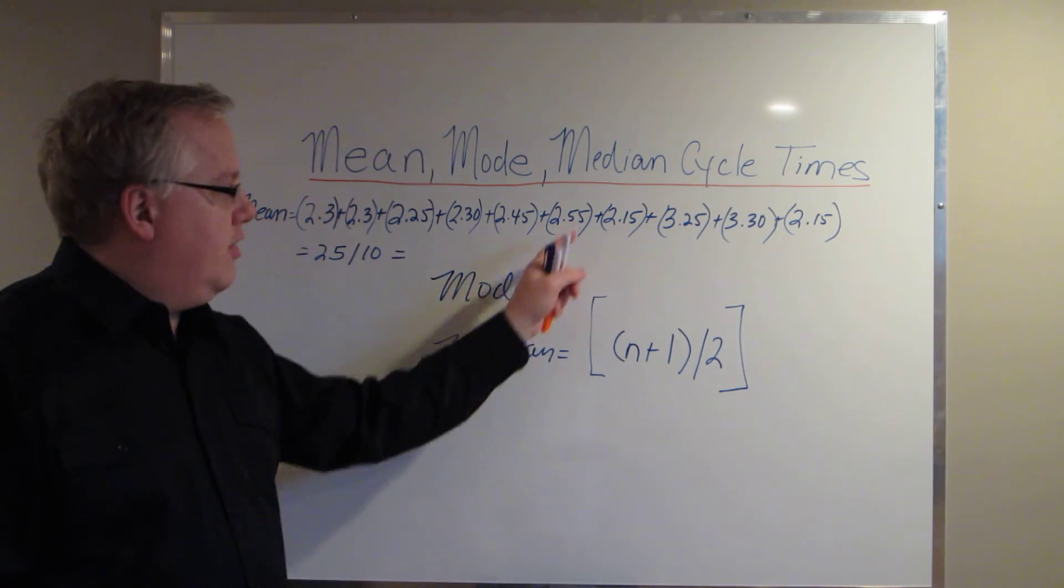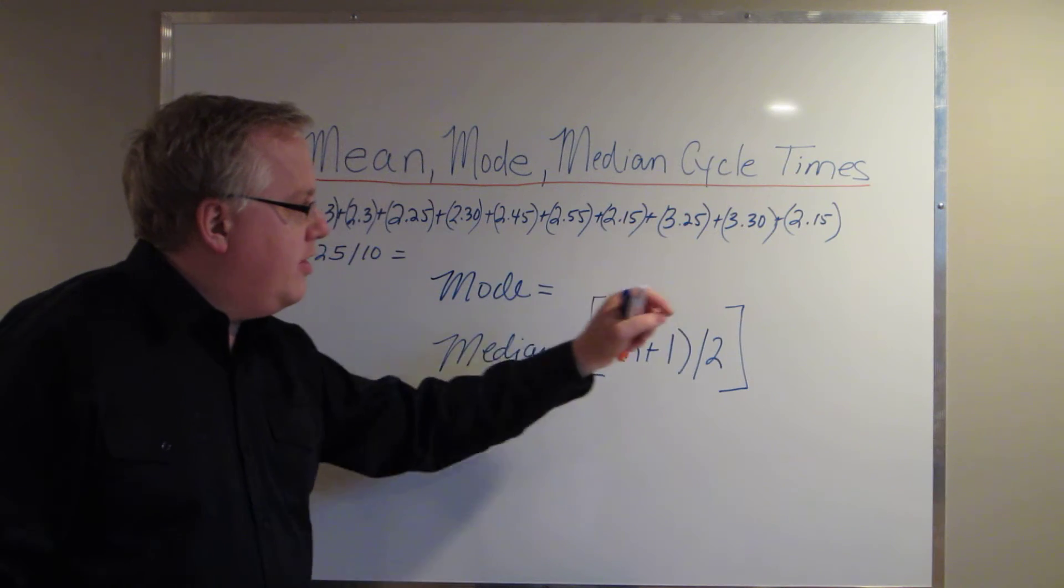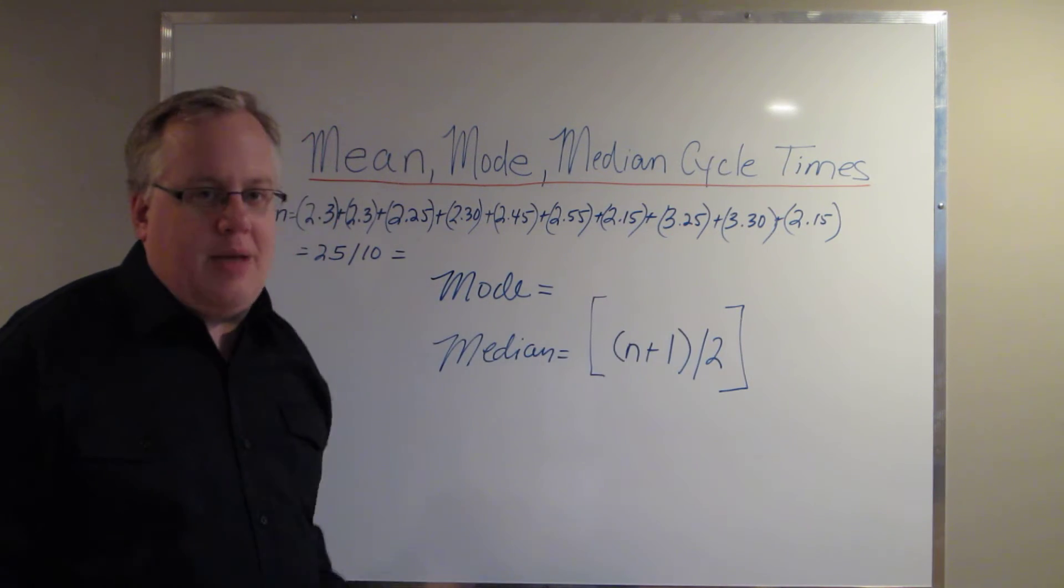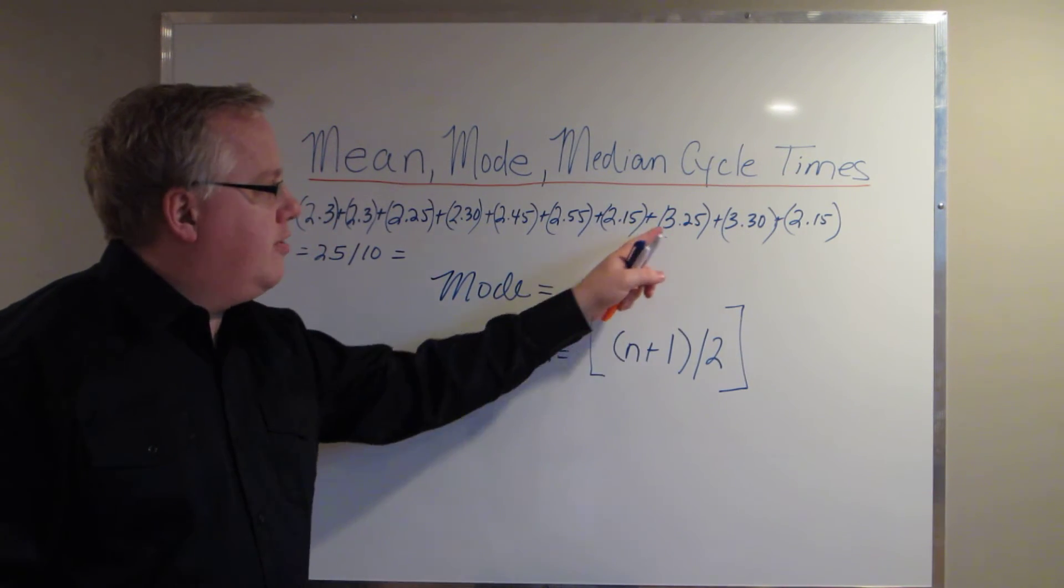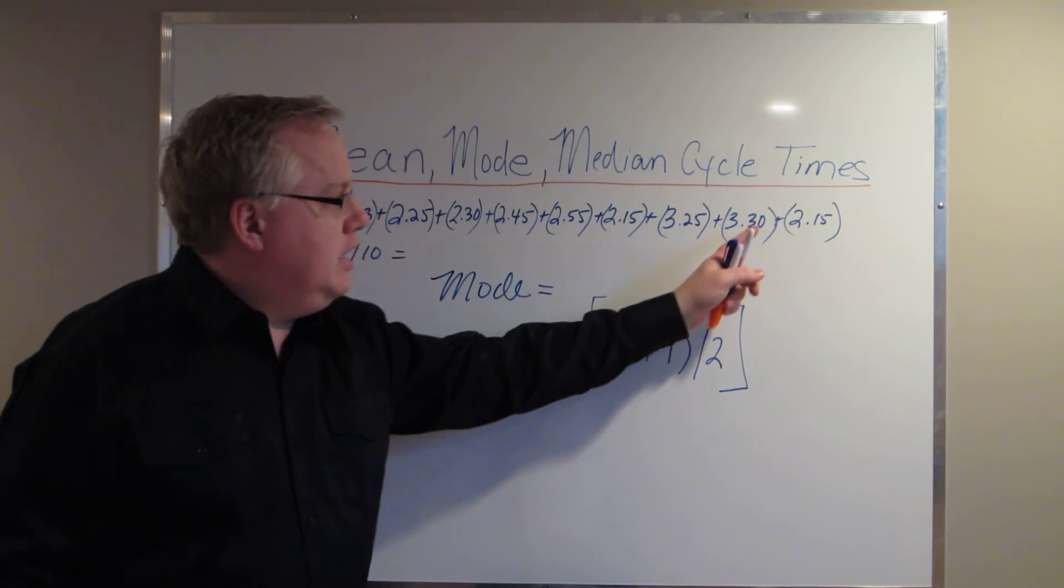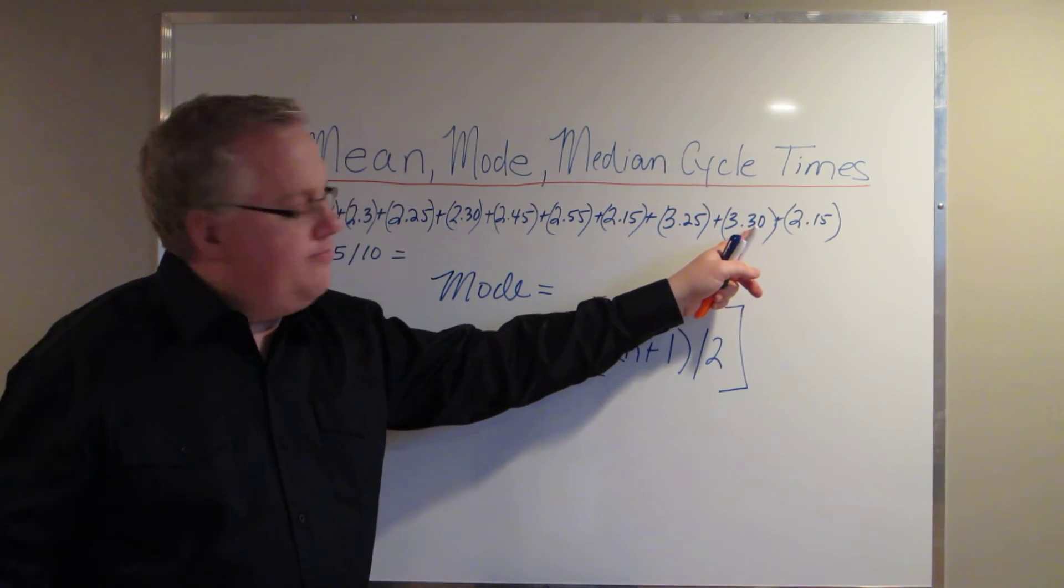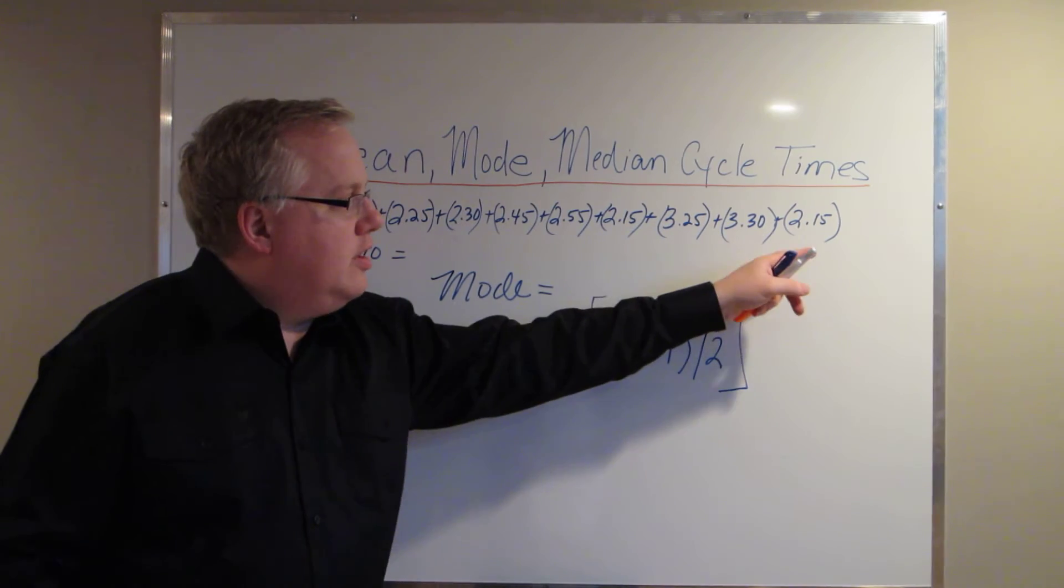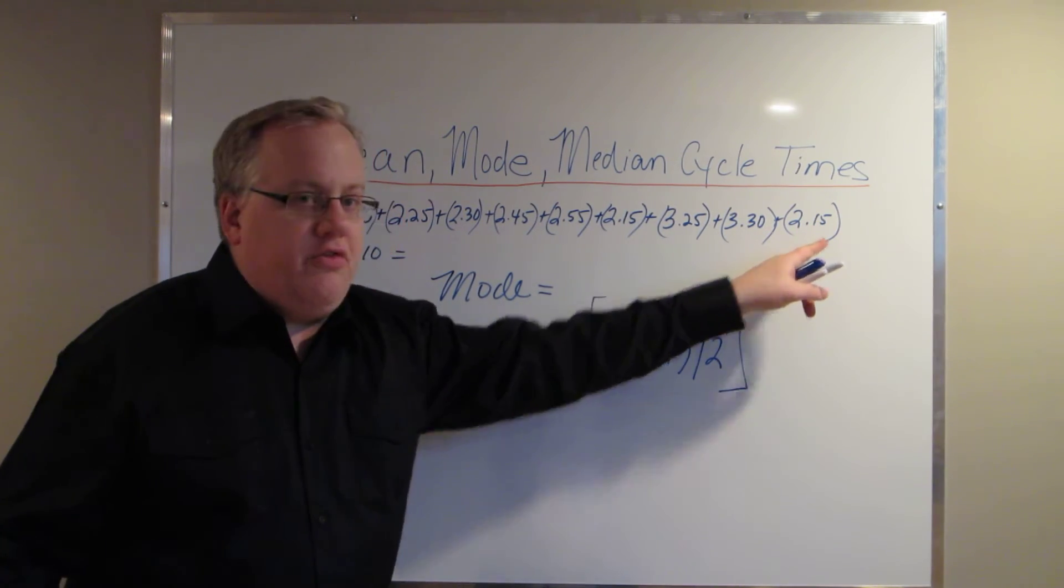This is minutes and then seconds, 2 minutes and 55 seconds, 2 minutes and 15 seconds. Here's a high cycle time of 3.25. The individual had some issues with the bill of materials here. 3.30 had another issue with the bill of materials and then went down to 2.15.